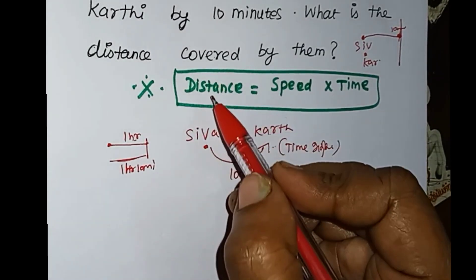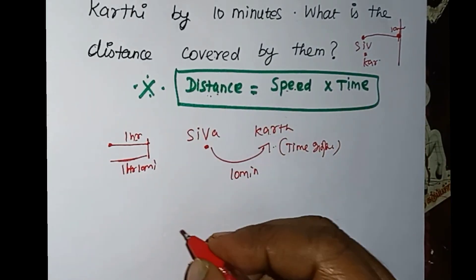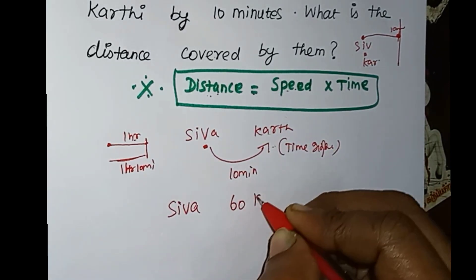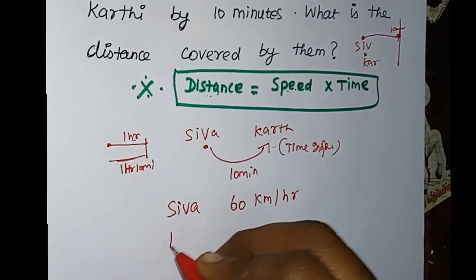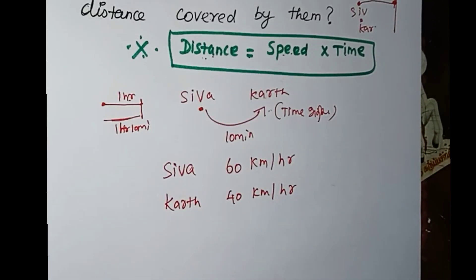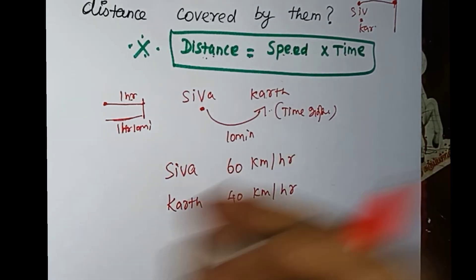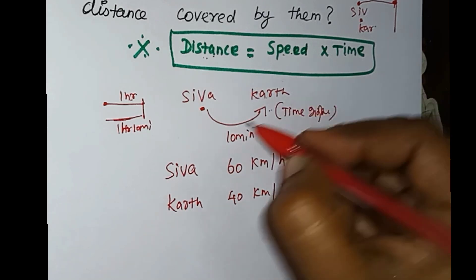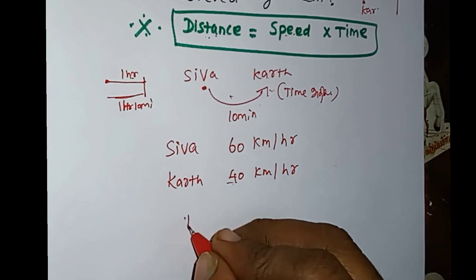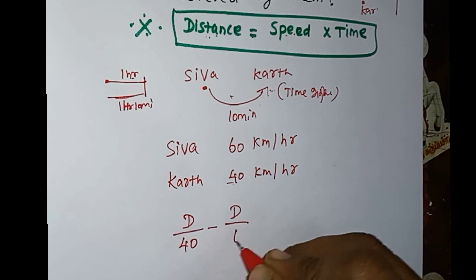First, we need to know the formula: Distance equals Speed into Time. We need to know the speed of Shiva, which is 60 km per hour, and the speed of Karthi, which is 40 km per hour. We need to find the distance between the two of them.